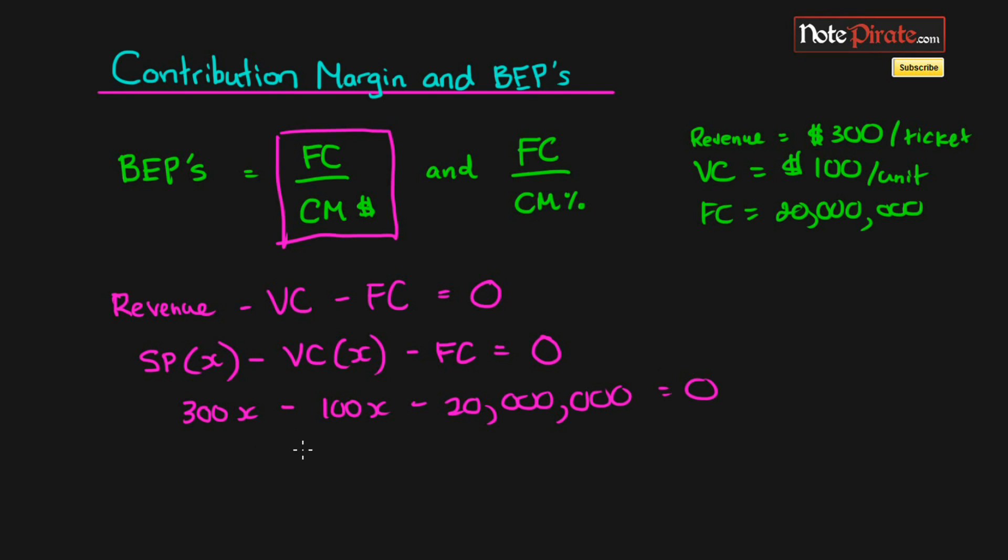And when we simplified this and grouped the like terms, the x's, we had 200x, and then we moved the $20 million on the other side to solve. And then we isolated for x, divided the right side by 200.